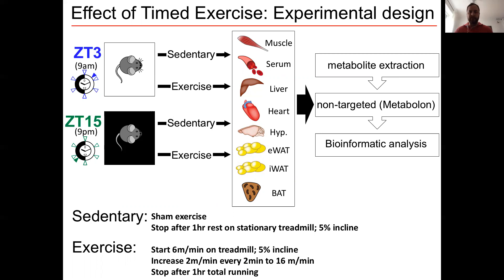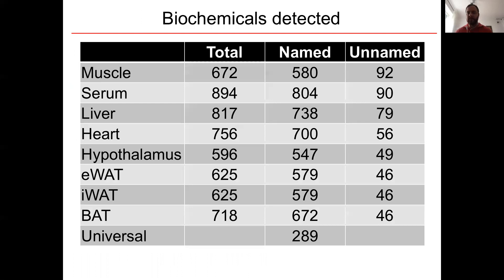We also wanted to investigate the production and tissue distribution of so-called exerkines — signaling molecules produced by different tissues in response to exercise — and see how they change according to time of day. Our collaborators in Copenhagen ran mice for one hour on a treadmill either in the morning around 9am (ZT3, three hours after lights on) or at night around 9pm (ZT15, three hours after lights off). They collected skeletal muscles, serum, liver, heart, hypothalamus, epididymal and inguinal white adipose tissues, and brown adipose tissue, and sent them to Metabolon in North Carolina for non-targeted metabolite profiling. We detected around 500 to 800 known metabolites in each tissue, with 289 common between all tissues.